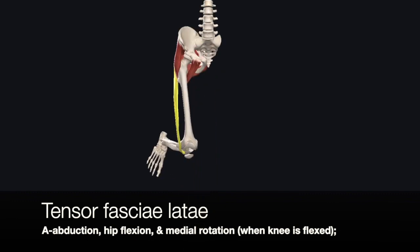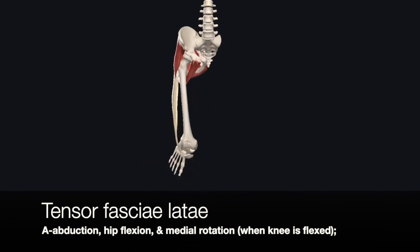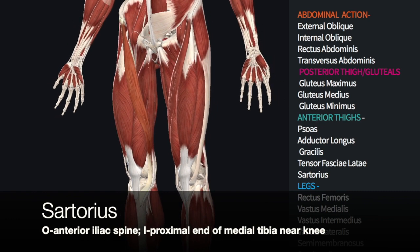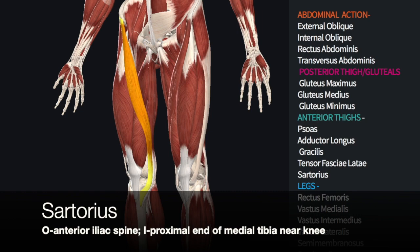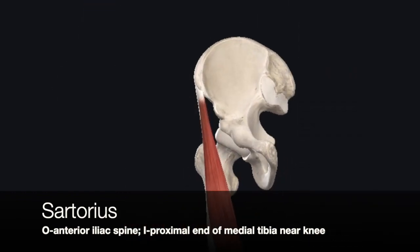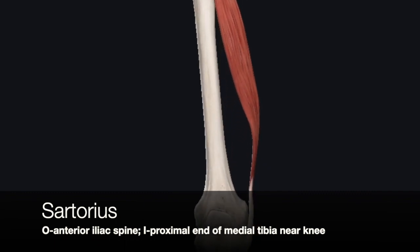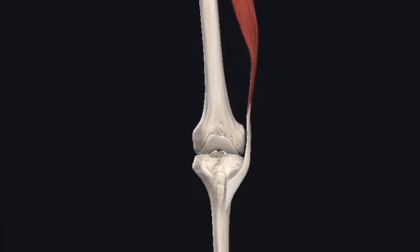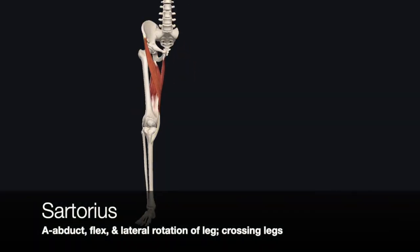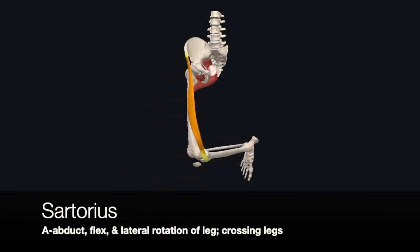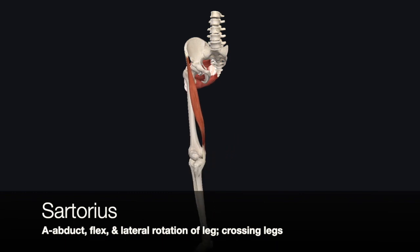The iliotibial tract inserts into the lateral condyle of the tibia. The tensor fasciae latae is an abductor muscle and hip flexor, and also allows for medial rotation when the knee is flexed. The sartorius is the last major muscle acting on the anterior thigh. It is a superficial muscle that runs diagonally across the thigh, originating at the anterior iliac spine and inserting into the medial proximal end of the tibia. The sartorius flexes and abducts the leg, and also causes lateral rotation when the knee is bent, allowing one to cross their legs when seated.